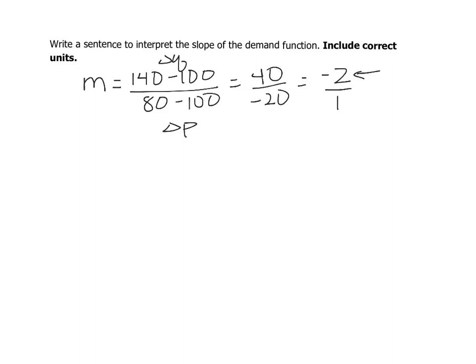Remember our numerator, these were our number of surfboards, so this is surfboards. In our denominator, those were our prices, so this is our price in dollars.